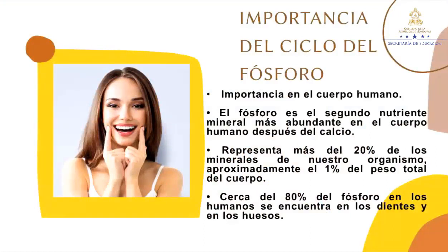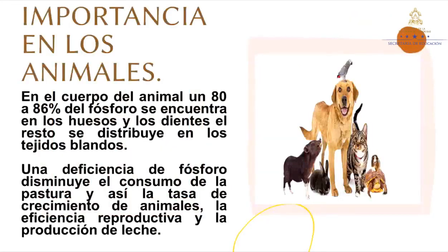Importancia del ciclo del fósforo. Importancia en el cuerpo humano: el fósforo es el segundo nutriente mineral más abundante en el cuerpo humano después del calcio. Representa más del 20% de los minerales de nuestro organismo, aproximadamente el 1% del peso total del cuerpo. Cerca del 80% del fósforo en los humanos se encuentra en los dientes y en los huesos. Importancia en los animales: en el cuerpo del animal, un 80 a 86% del fósforo se encuentra en los huesos y los dientes. El resto se distribuye en los tejidos blandos. Una deficiencia de fósforo disminuye el consumo de la pastura y así la tasa de crecimiento de animales, la eficiencia reproductiva y la producción de leche.